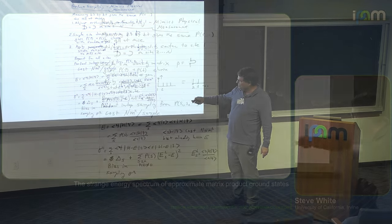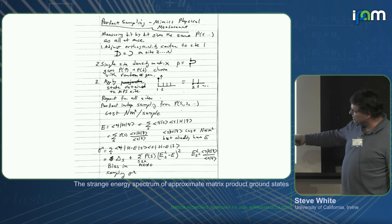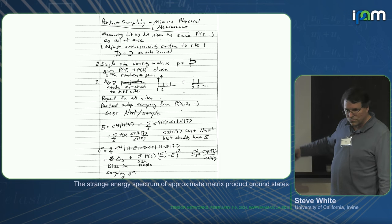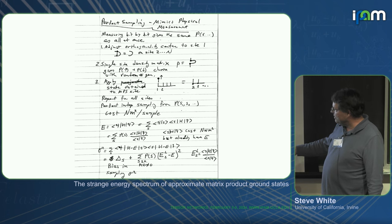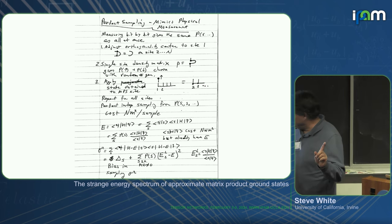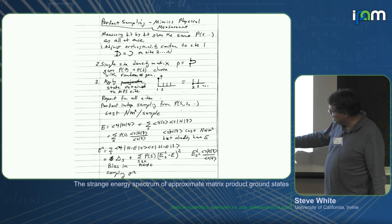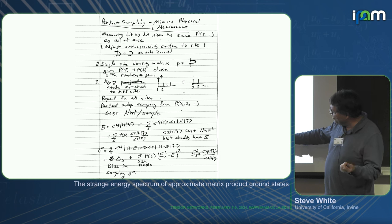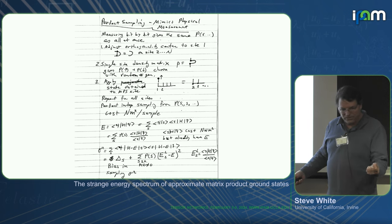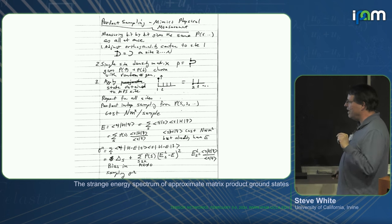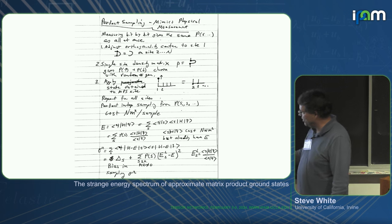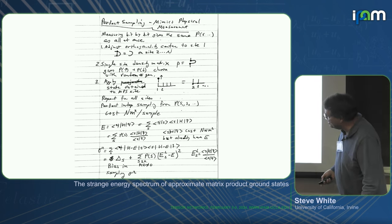What about sampling the variance? We insert an extra set of states right in the middle of (H minus E) squared. What you end up getting is essentially E local squared, so it's computationally efficient — like the same sort of thing you evaluate for the energy. But you get a bias: states where the probability P(S) is zero but still contribute to the expression will be omitted and never sampled. That is a bias we call delta sub S. It turns out to be quite small and goes away as you increase the bond dimension.